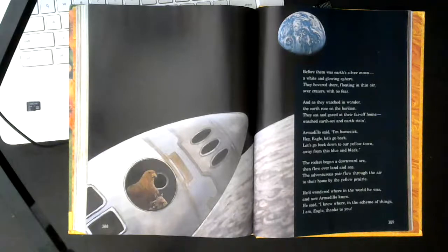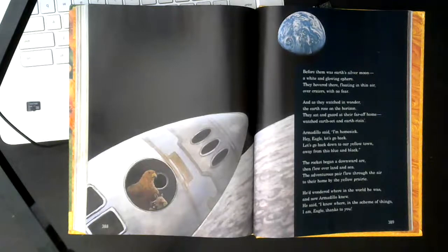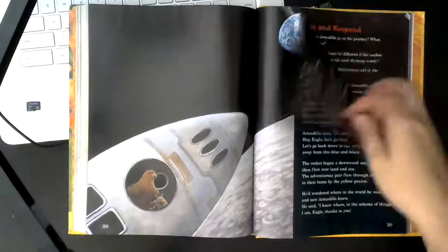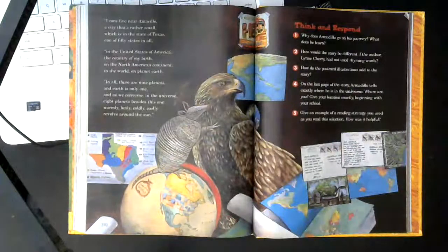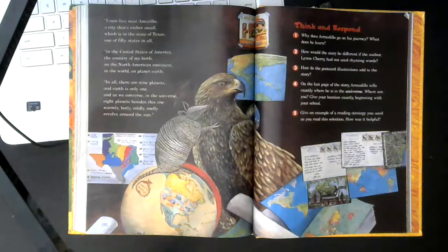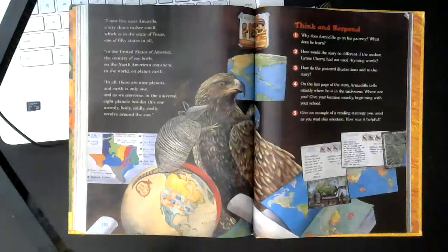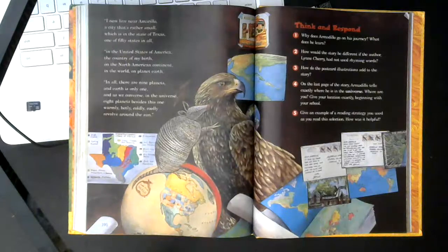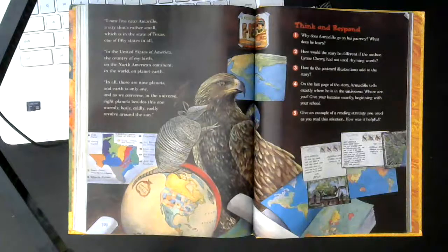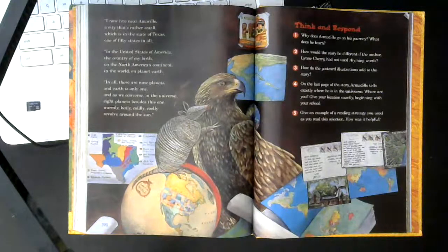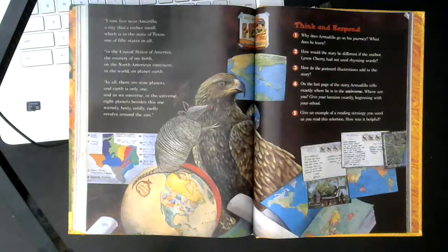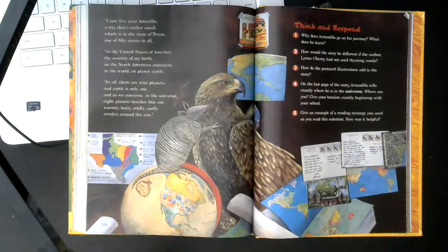He'd wondered where in the world he was, and now Armadillo knew. He said, I know where, in the scheme of things, I am eagle, thanks to you. I now live near Amarillo, a city that's rather small, which is in the state of Texas, one of 50 states in all. In the United States of America, the country of my birth, on the North American continent, in the world, on planet earth. In all there are nine planets, and earth is only one. And as we converse in the universe, eight planets besides this one, warmly, hotly, coldly, coolly, revolve around the sun.